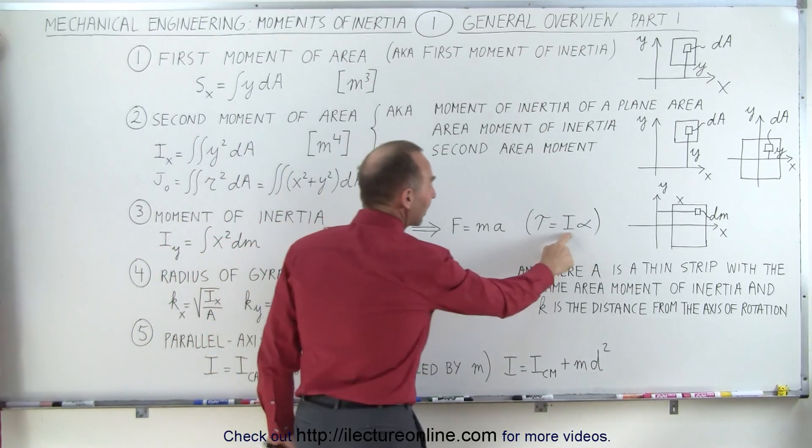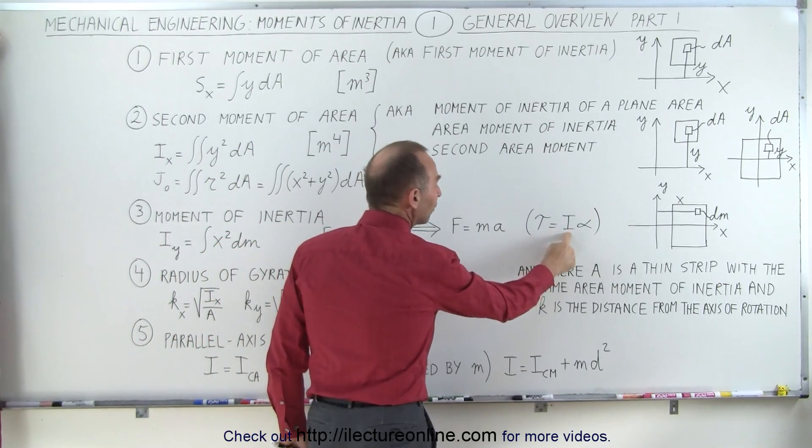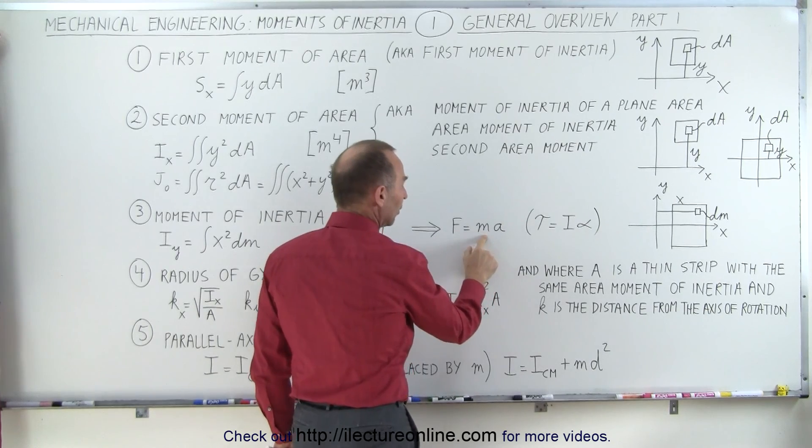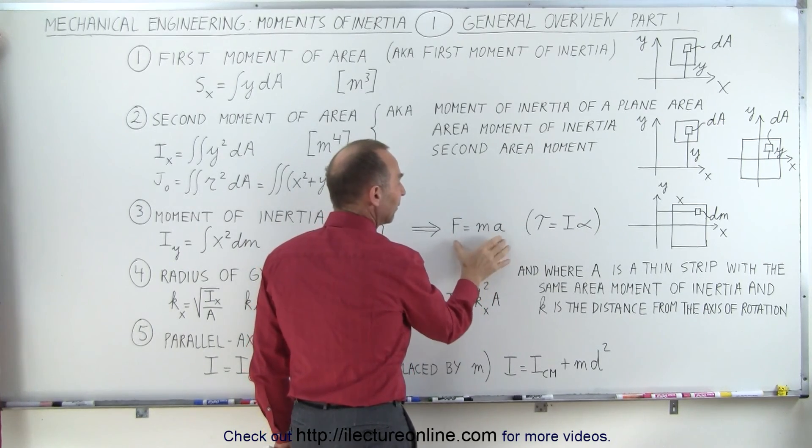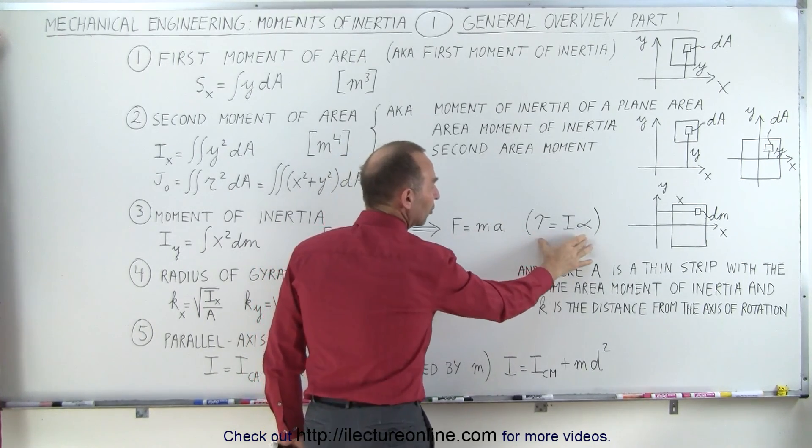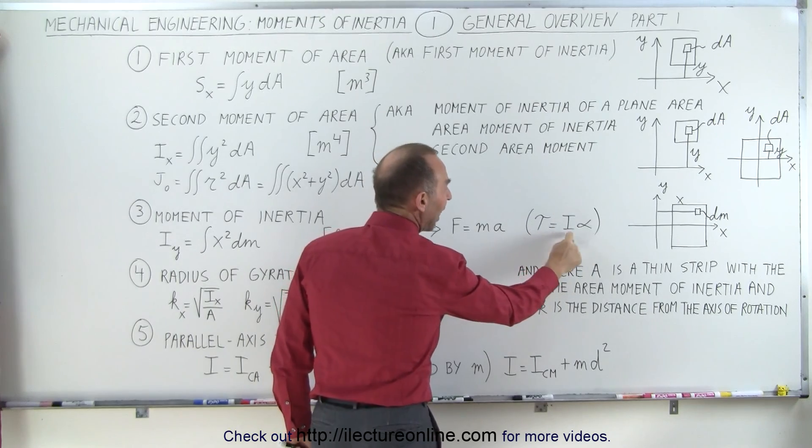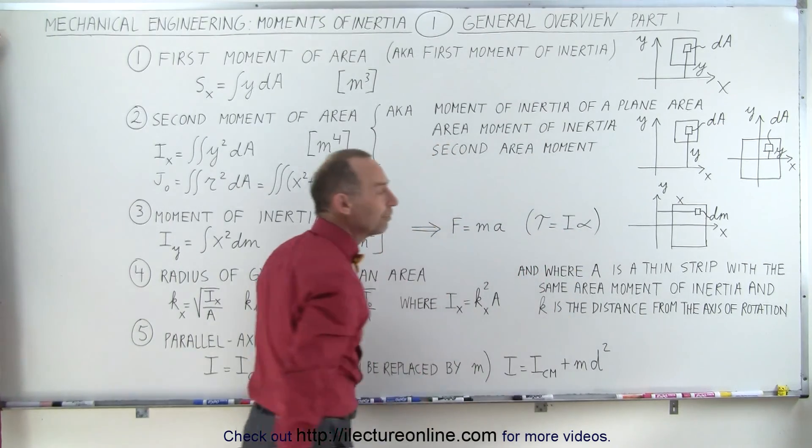Notice the moment of inertia I is the rotational equivalent of the mass in linear motion. When we have F equals ma for linear motion, the rotational equivalent will be torque equals I times alpha, where I is the moment of inertia.